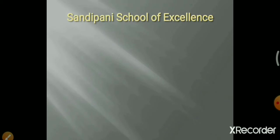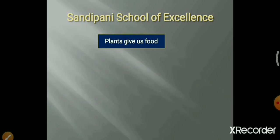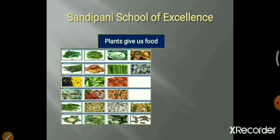In this Chapter 2, we learn about the importance and uses of plants. Plants give us many things like food, furniture, fiber, and many more. Only plants can make food, as we saw in the last chapter, plants make food by their own, and we can use that food.